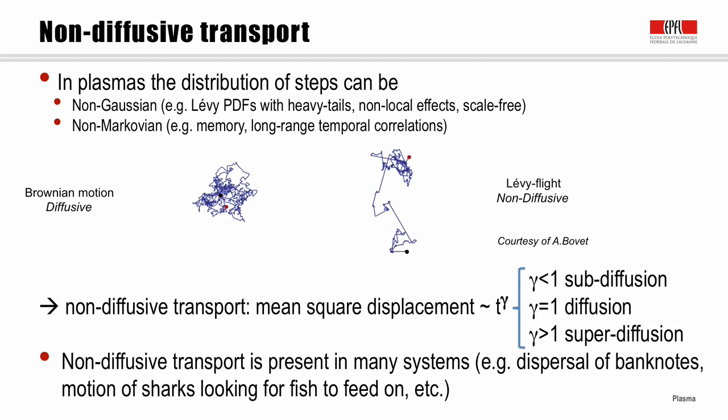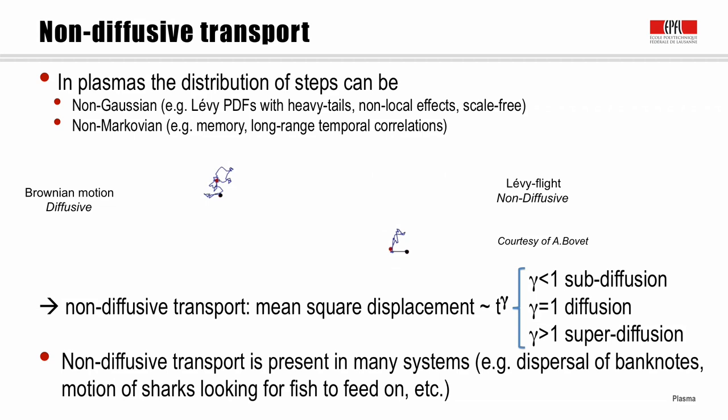The consequence of this non-classical behavior is that the diffusive transport model does not work. We have a non-diffusive situation in which the mean square displacement is no longer proportional simply to time, but is proportional to time to an exponent gamma — which may be smaller than one (sub-diffusion) or larger than one (super-diffusion). Non-diffusive transport is in fact very, very common in physical systems.